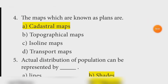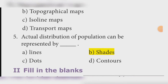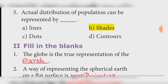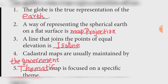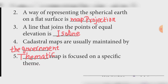Fifth: Actual distribution of population can be represented by a dot map. Fill in the blanks. The globe is the true representation of the Earth. A way of representing the spherical Earth on a flat surface is map projection. A line that joins points of equal elevation is an ISO line. Cadastral maps are usually maintained by the government. A thematic map is focused on a specific theme.